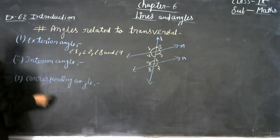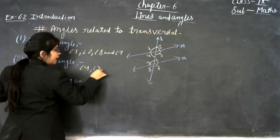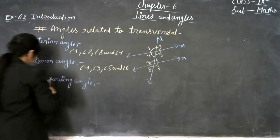And the interior angles are angle 3, angle 4, angle 5, and angle 6. We also get corresponding angles — and corresponding angles exist in pairs.